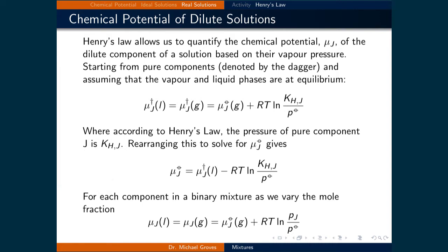For each component in a binary mixture, as we vary the mole fraction, the chemical potential of component J in the liquid equals the chemical potential of component J in the gas, which equals the standard chemical potential of component J in the gas phase plus RT times the natural logarithm of the partial pressure of J divided by the standard pressure. Here we use the partial pressure of J because we are measuring the actual partial pressure at a specific mole fraction.